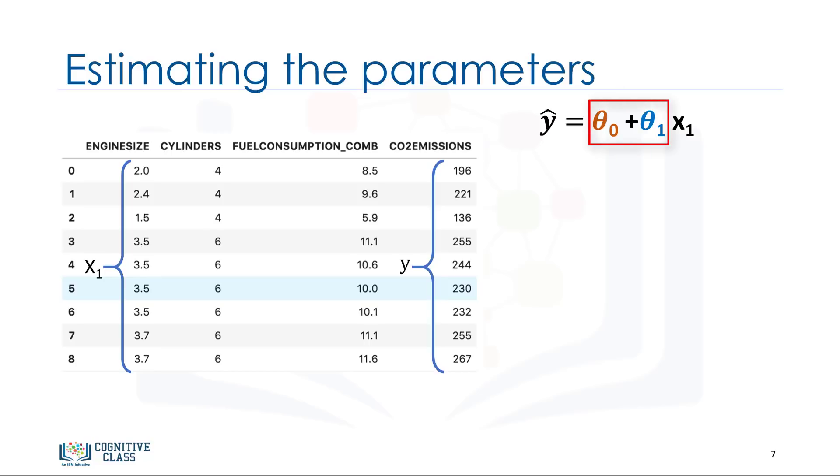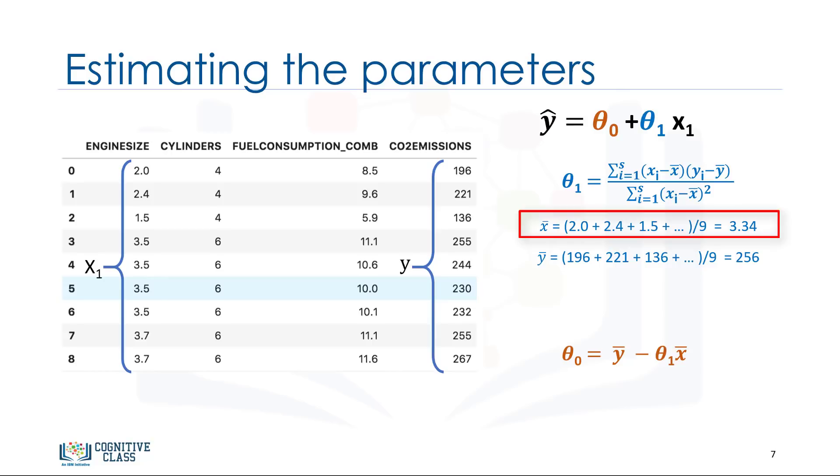As mentioned before, theta0 and theta1 in the simple linear regression are the coefficients of the fit line. We can use a simple equation to estimate these coefficients. That is, given that it's a simple linear regression with only two parameters, and knowing that theta0 and theta1 are the intercept and slope of the line, we can estimate them directly from our data. It requires that we calculate the mean of the independent and dependent, or target columns, from the dataset. Notice that all of the data must be available to traverse and calculate the parameters. It can be shown that the intercept and slope can be calculated using these equations. We can start off by estimating the value for theta1. This is how you can find the slope of a line based on the data. X-bar is the average value for the engine size in our dataset. Please consider that we have nine rows here, rows 0 to 8.